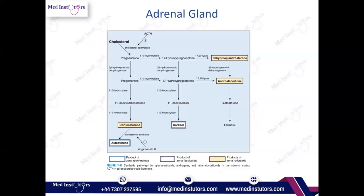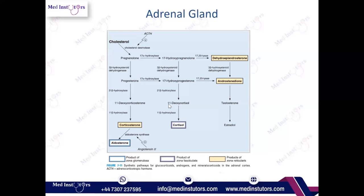Now let's look at steroidogenesis — how the C27 cholesterol molecule is processed when it enters the adrenal gland. The process is called steroidogenesis because it gives rise to steroid-based hormones. The high yield points: the first molecule formed in steroidogenesis is pregnenolone. Pregnenolone gives rise to progesterone, which is the 21-carbon hormone, and progesterone further gives rise to all the rest of the steroid-based hormones in the adrenal gland.